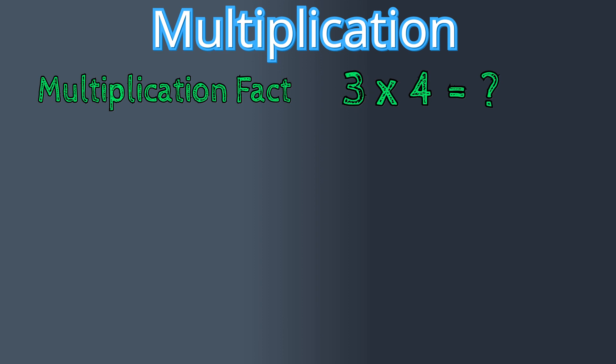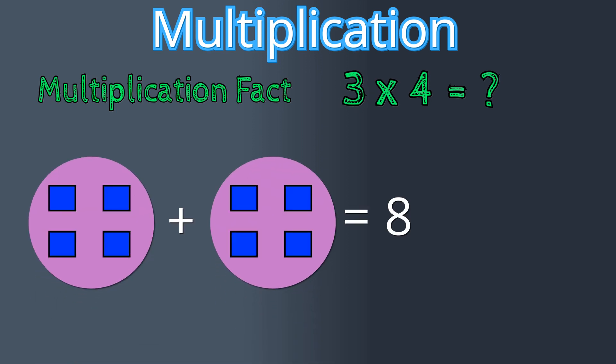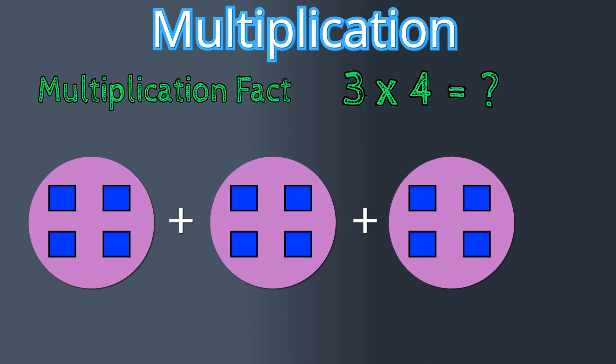But I might remember that 2 times 4 is 8, and if I understand that multiplication is repeated addition, then I know that 3 times 4 is the same as 3 groups of 4. So I just need to add one more group of 4 to find my total, which is 12.